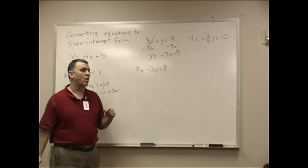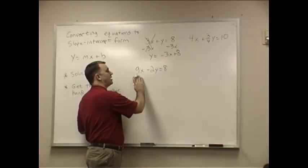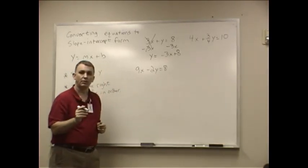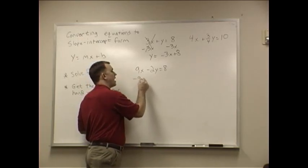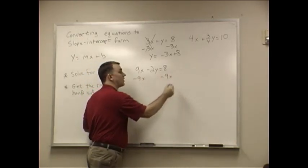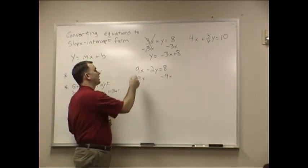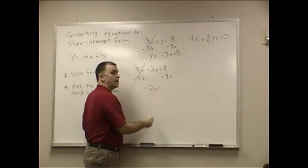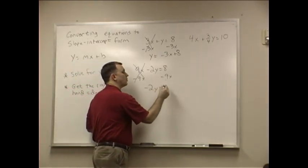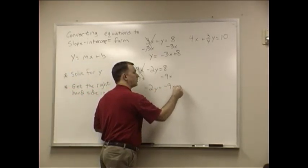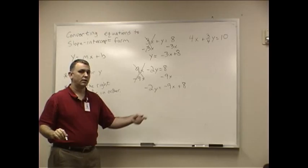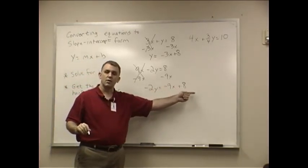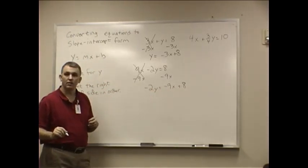Now, if we look at the second one, I've got 9X minus 2Y equals 8. I'm going to take 9X, again, because the X is on the wrong side, and I'm going to subtract it from both sides. That's going to leave me with negative 2Y equals. Again, I'm going to write negative 9X plus 8, where the X part comes first and the number part comes second, the constant comes second.